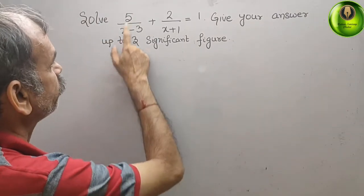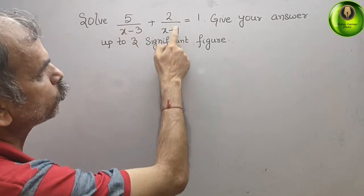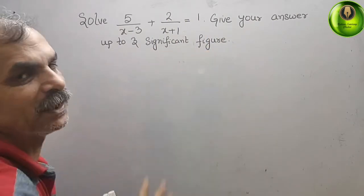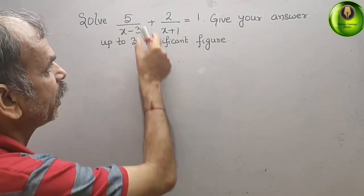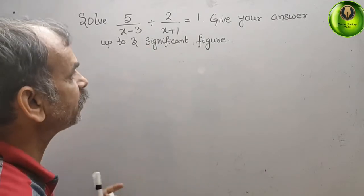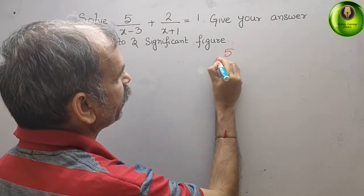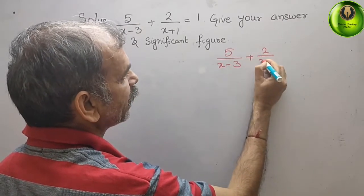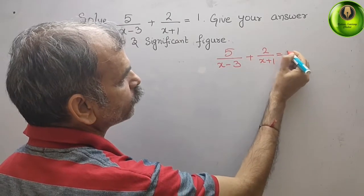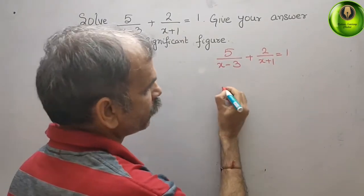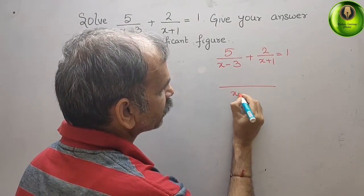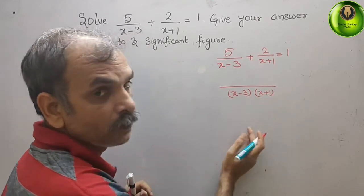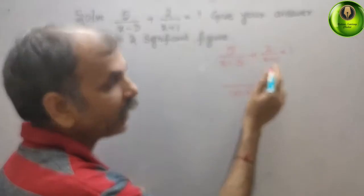The question is: solve 5/(x-3) + 2/(x+1) = 1, giving the answer up to 3 significant figures. First, we write the problem: 5/(x-3) + 2/(x+1) = 1. Now take the LCM, which is (x-3)(x+1). Cross multiply.